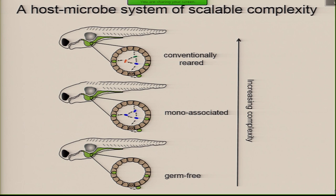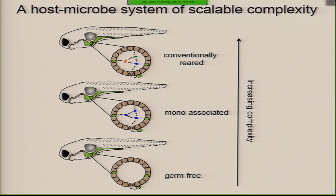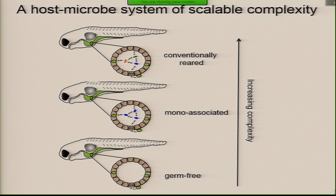Now I want to show you some strengths of the system. One strength is that we can work along a real scale and spectrum of complexity of host-microbe interactions — from a very complex community of hundreds of bacterial species, similar to mammals, down to mono-associations or di-associations. I'm going to be telling you about three short vignettes at different places along this complexity.